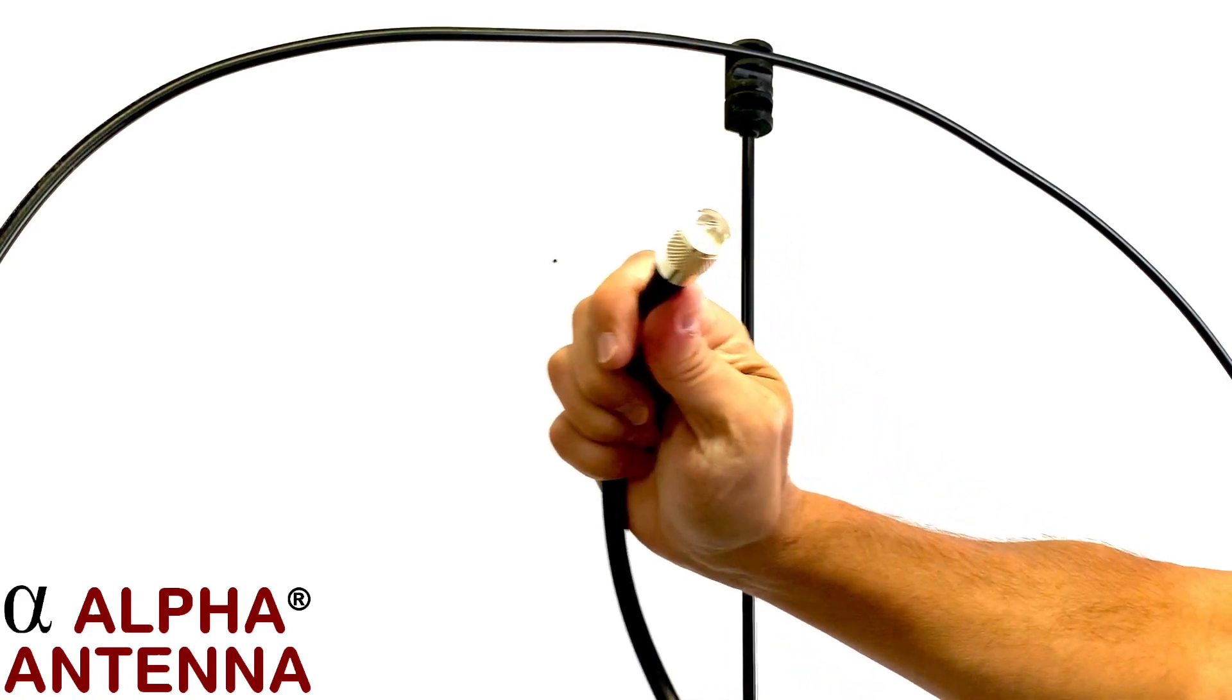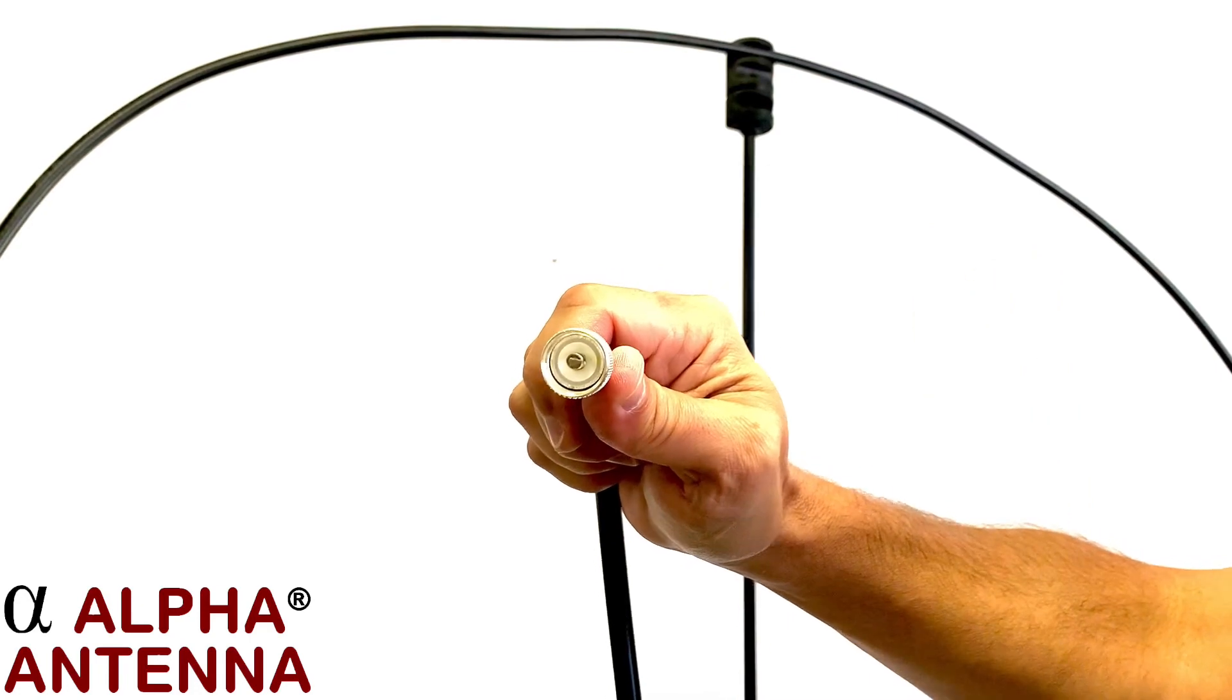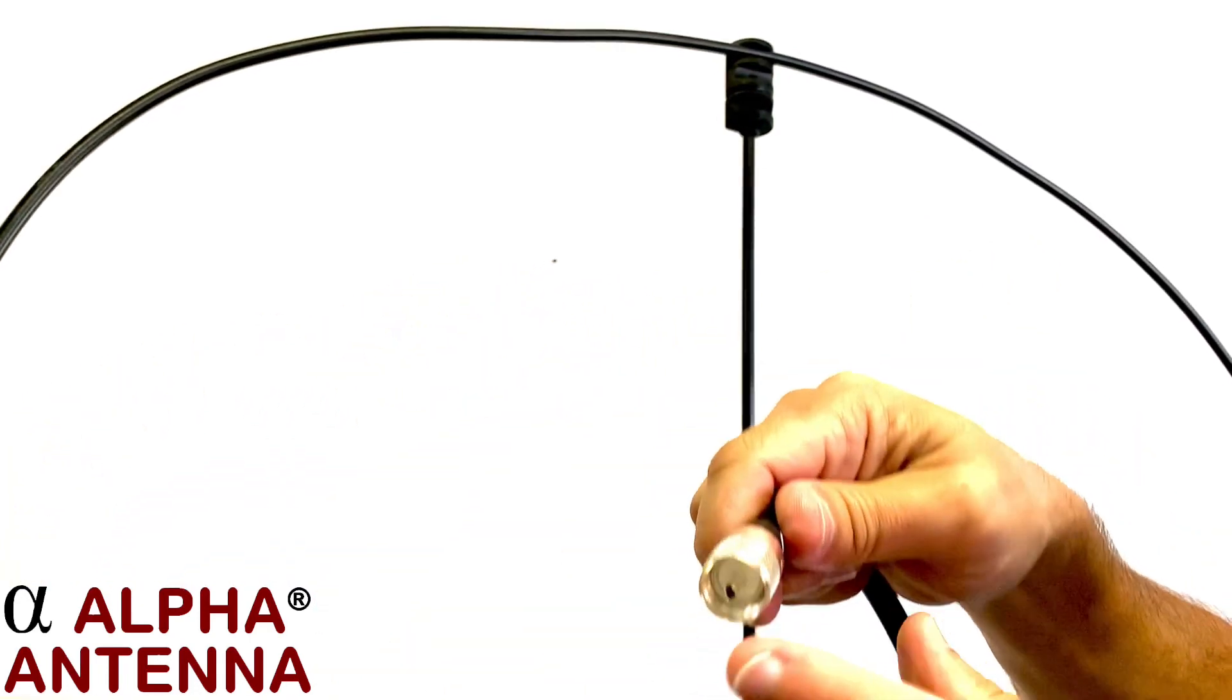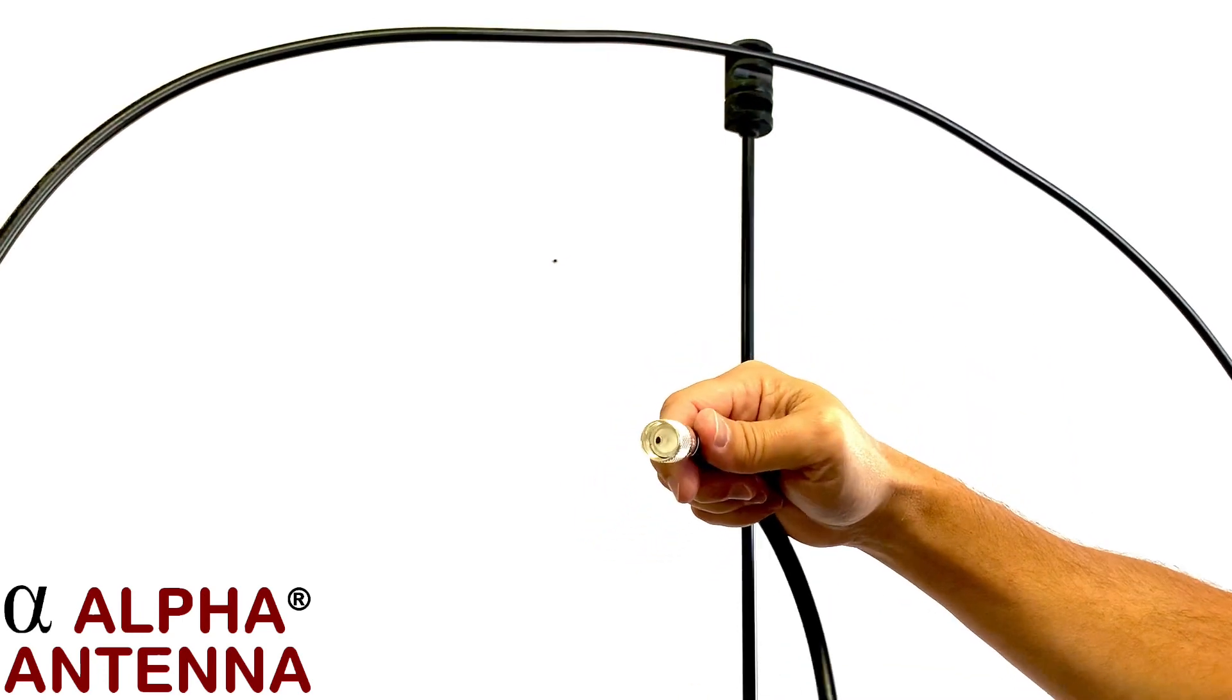Look for the point where there is no solder on the center conductor. Don't use that one to attach the add-on element. Use this one - it does not have solder on the center conductor.